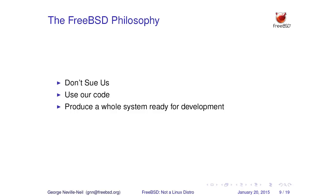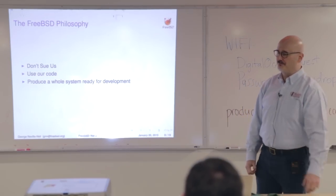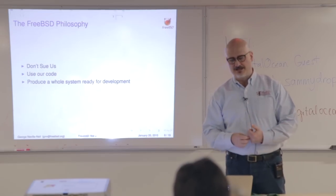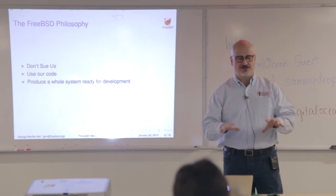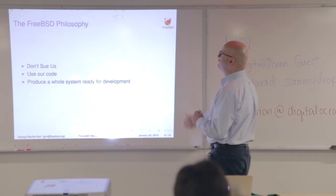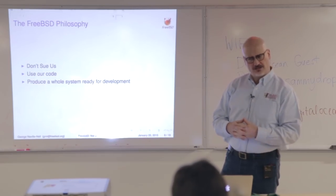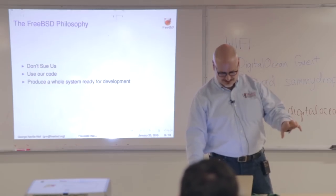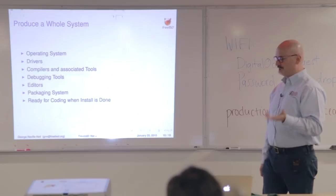The FreeBSD project and the BSD license — very simple philosophy. Do not sue us. If you read the license, it pretty much says if you cut yourself with this, we're sorry, but don't sue us. We really like people to use our code. One of the reasons we use a very permissive license, which has generated plenty of arguments between different open source groups, is all we really care about is that people are using our code and find it useful. We don't force people to give back — we really want the code to just run. FreeBSD specifically produces a whole system ready for development: operating system, drivers, compilers, associated tools, debugging tools, editors, packaging system — ready to code.